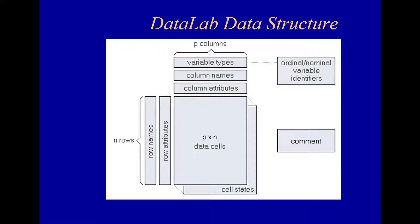Datalab always works on a single two-dimensional matrix, assuming the columns to be the variables and the rows to be the observations. Each cell of this p by n matrix contains a floating point number which represents the particular data point. Further, each cell is provided with an additional status flag which indicates various states of this cell, such as whether the cell is empty or whether it is marked.